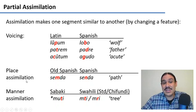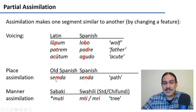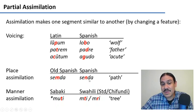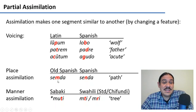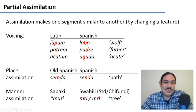We can have place assimilation. In Old Spanish, we had the word 'semda', which meant path. This M is bilabial and the D is alveolar. Because we have two different places of articulation, in modern Spanish the first sound became the same place as the second one. Now we have an alveolar N with an alveolar D — 'senda'. This makes it easier since you need to move your tongue less.